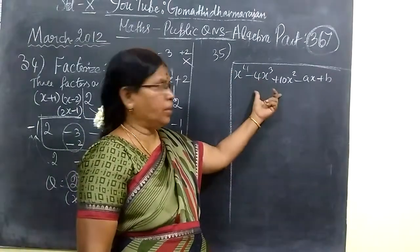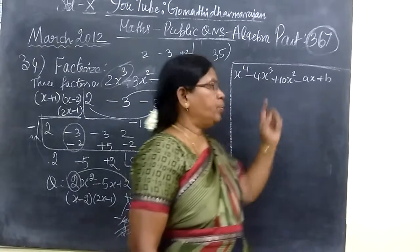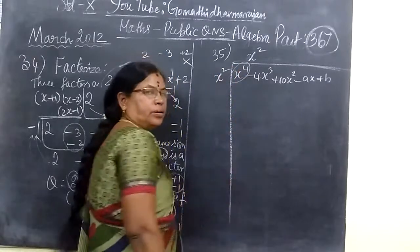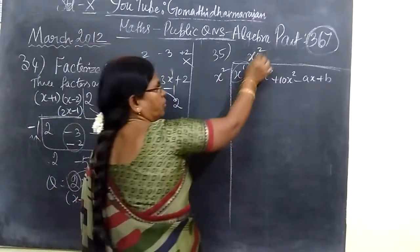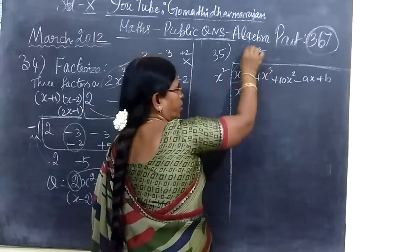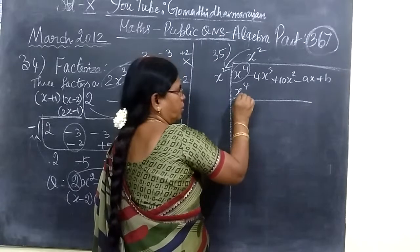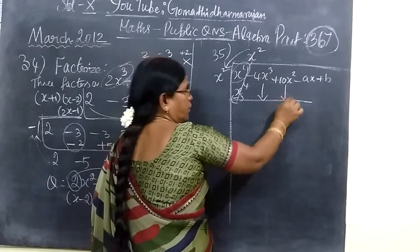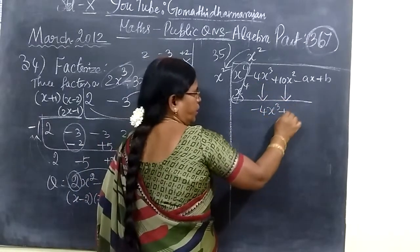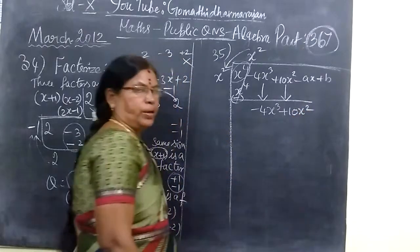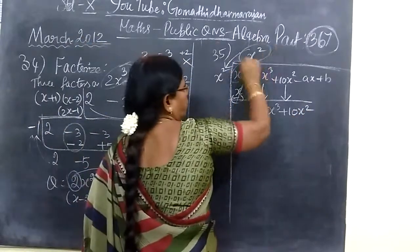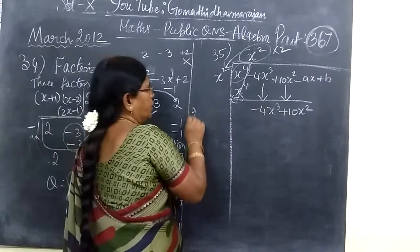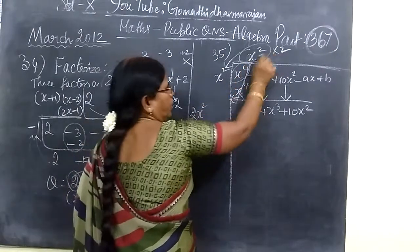Now come to the next one. You are given a perfect square. You want to find the value of A and B. Now you take 2 terms: minus 4x³ plus 10x². Then in the next one, you are multiplying by only 2. Then 2 square, multiply 2 into x².